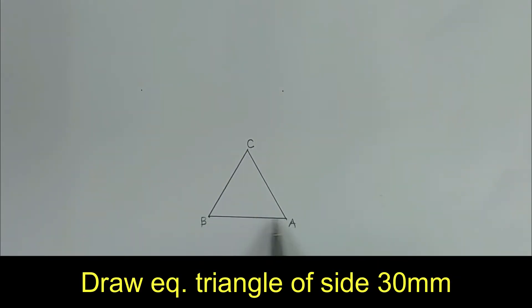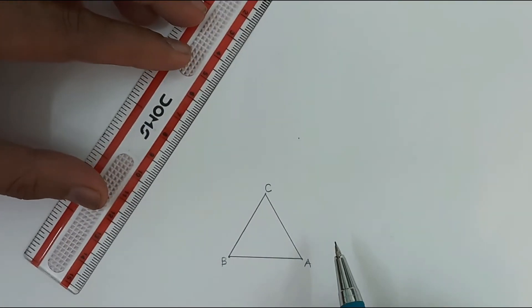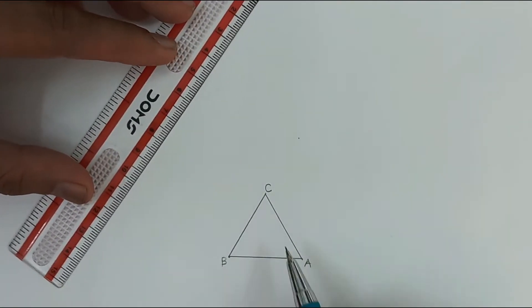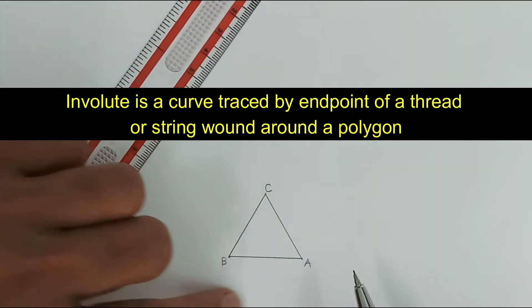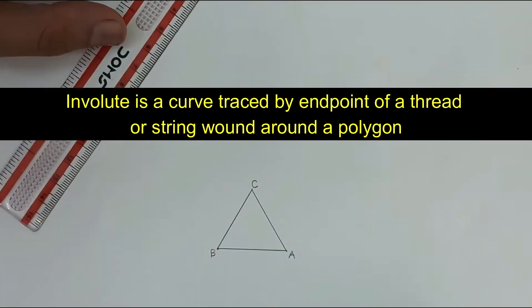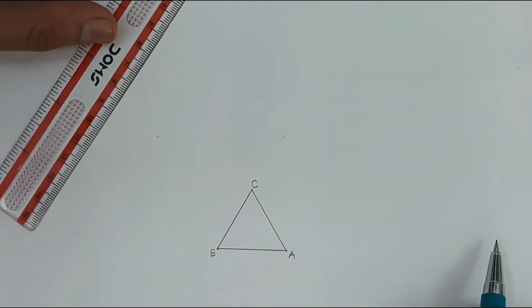So first we have to draw an equilateral triangle of given side that is 30 mm. Now involute is a curve which rotates around a polygon. So if I just wound a thread around this polygon and if I go on winding that thread, then locus traced by the end point of the thread is called as involute.